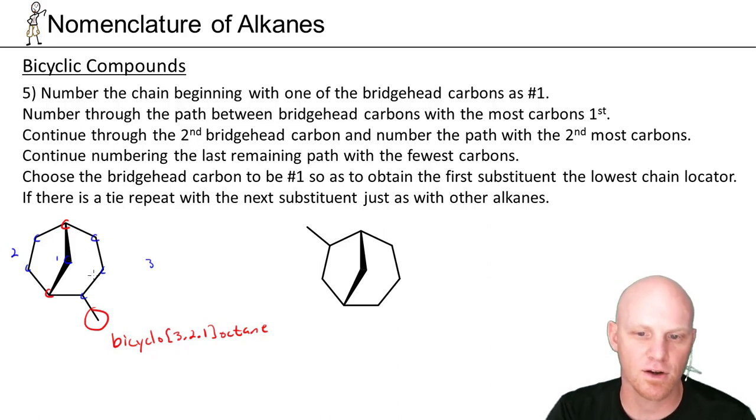The way you number the chain here is one of your bridgeheads is always number one. So let's say I pick the top bridgehead to be number one. And you always number through starting with the longest pathway, the most carbons on the pathway. So we'd number one, two, three, four, five, six, seven. Notice we keep numbering through the other bridgehead, number through the second longest pathway. And then any carbons on the third pathway get their subsequent numbers. So in this case, that would leave our first substituent we see as carbon number four.